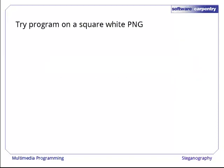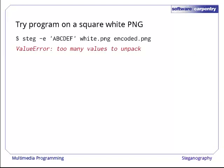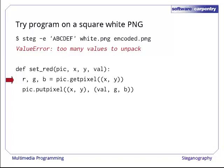Given the way our program is written, it should work without any changes on PNGs. But when we try it, we get this rather cryptic error message. When we run the program in the debugger, we see that the problem is on this line. For some reason, we can't unpack the result of getPixel into its component red, green, and blue values.